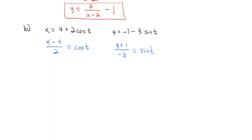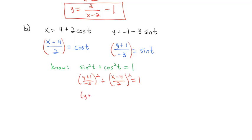One way we could attack this is to take the cosine inverse and then plug it into the sine. That's going to be a lot more work than we need to do, though, because we know that sine squared of t plus cosine squared of t equals 1. So let's do that. We're going to take the sine of t, which is y plus 1 over negative 3 squared, plus the cosine of t, which is x minus 4 over 2 squared, must equal 1. And if we put that squared on top and bottom, we end up with y plus 1 squared over 9 plus x minus 4 squared over 4 equals 1. And we should recognize that function.